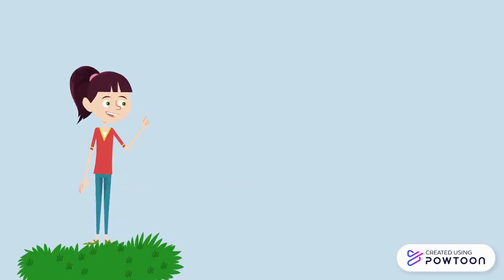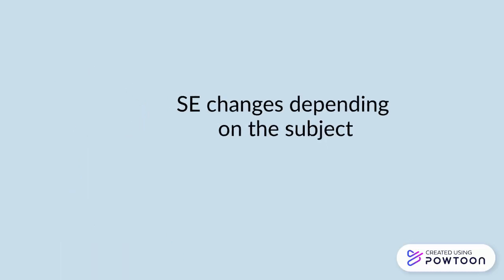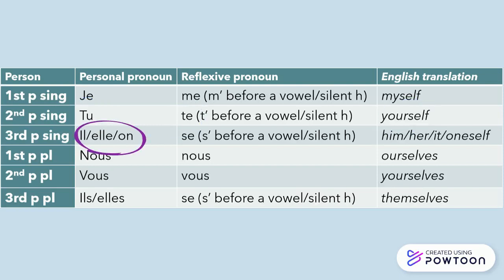As you can notice, the pronoun SE changes depending on the subject. So, for JE, we have the reflexive pronoun ME or M' before a vowel or a silent H — the English translation is 'myself.' For TU, it is TE or T', meaning 'yourself.' For IL, ELLE, ON, we keep SE or S', meaning 'himself,' 'herself,' 'itself,' or 'oneself.'